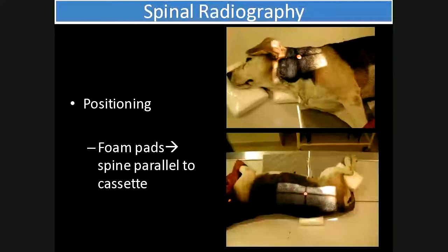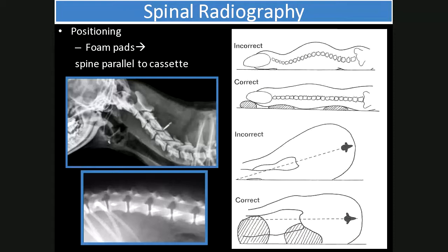Positioning makes use of a lot of foam pads and positioning devices. It's important to have the spine parallel to the tabletop and parallel to the cassette, especially if you want to compare the widths of intervertebral disc spaces. Positioning aids are usually placed under the muzzle and under the neck for the cervical spine, or in the hollow between the ribs and pelvis for lumbar and thoracolumbar studies. Also beneath the lower front or back limb and underneath the sternum. Using foam pads eliminates the natural curves of the spine and gets it straight.